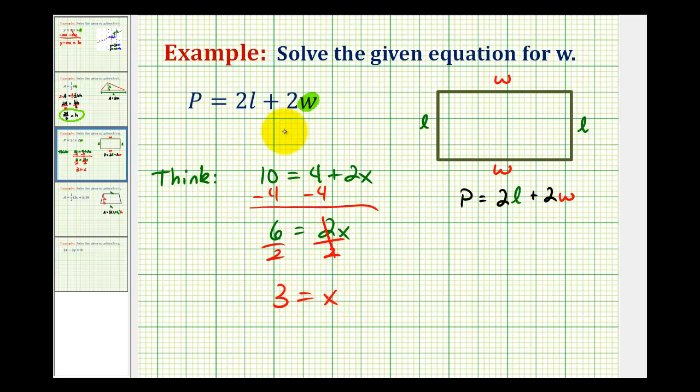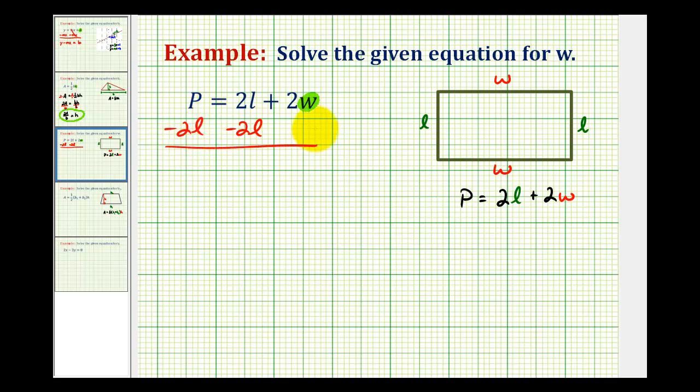We'll follow the same steps when trying to isolate w in this equation. We'll start by subtracting 2l on both sides to isolate 2w. So we have P minus 2l equals 2w. Then the last step to isolate w would be to divide both sides by 2. So we have P minus 2l divided by 2 equals w. Now this equation is solved for w.